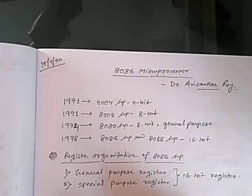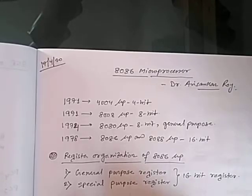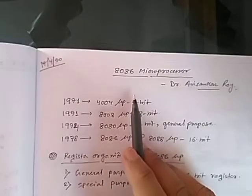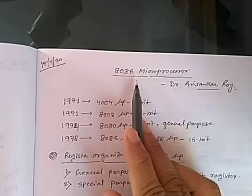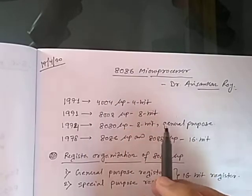Good morning students. Today we will discuss about the 8086 microprocessor. In the last lectures, we have already completed the discussion on the 8085 microprocessor and the peripheral 8255 PPI. And now today we will start our 8086 microprocessor.